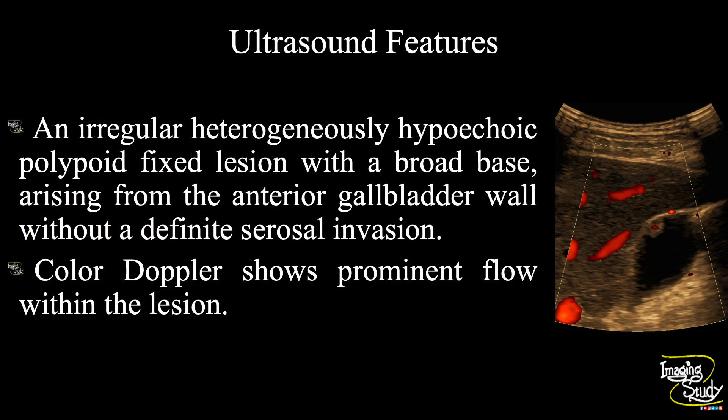In summary, an irregular heterogeneously hypoechoic polypoid fixed lesion arising from the anterior gallbladder wall is noted without any definite serosal invasion. Color Doppler shows prominent flow within this lesion, indicating it as a suspicious polypoid lesion, possibly a neoplastic mass lesion.